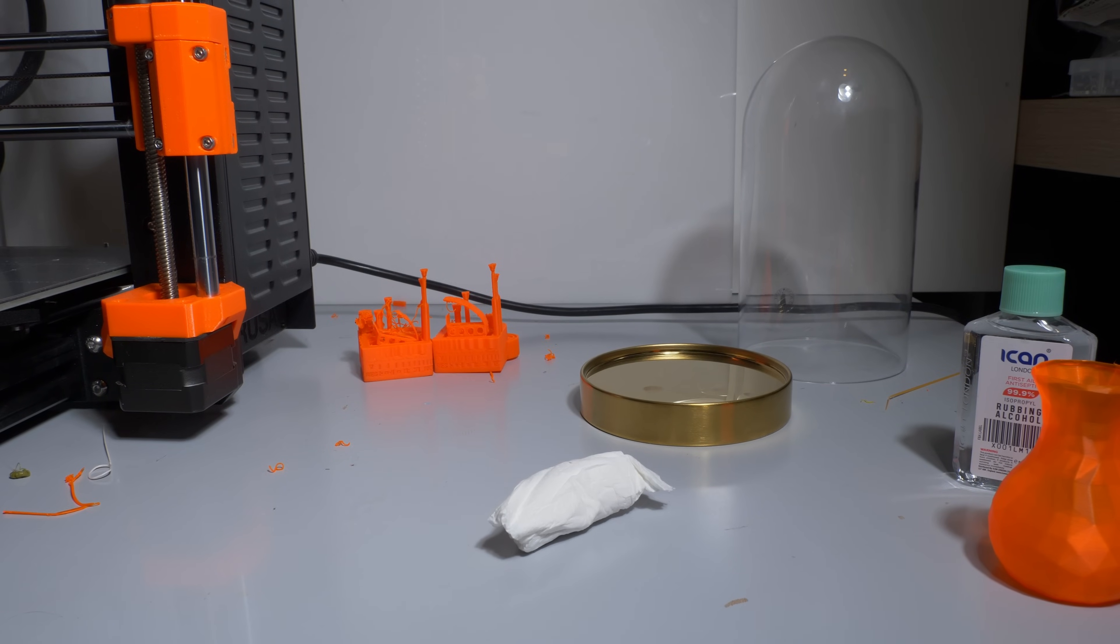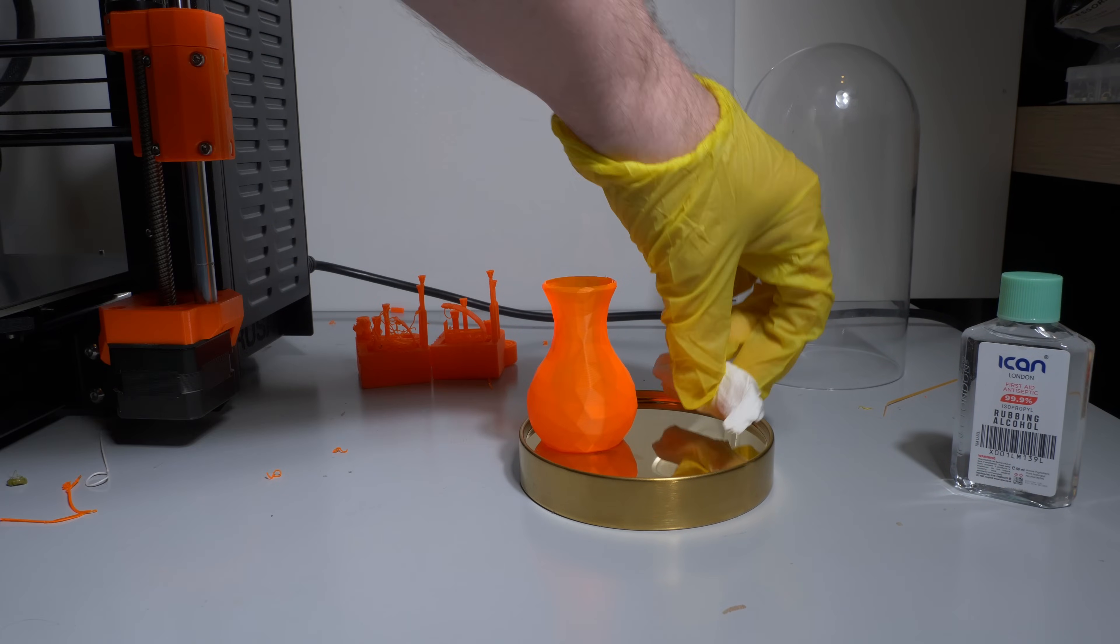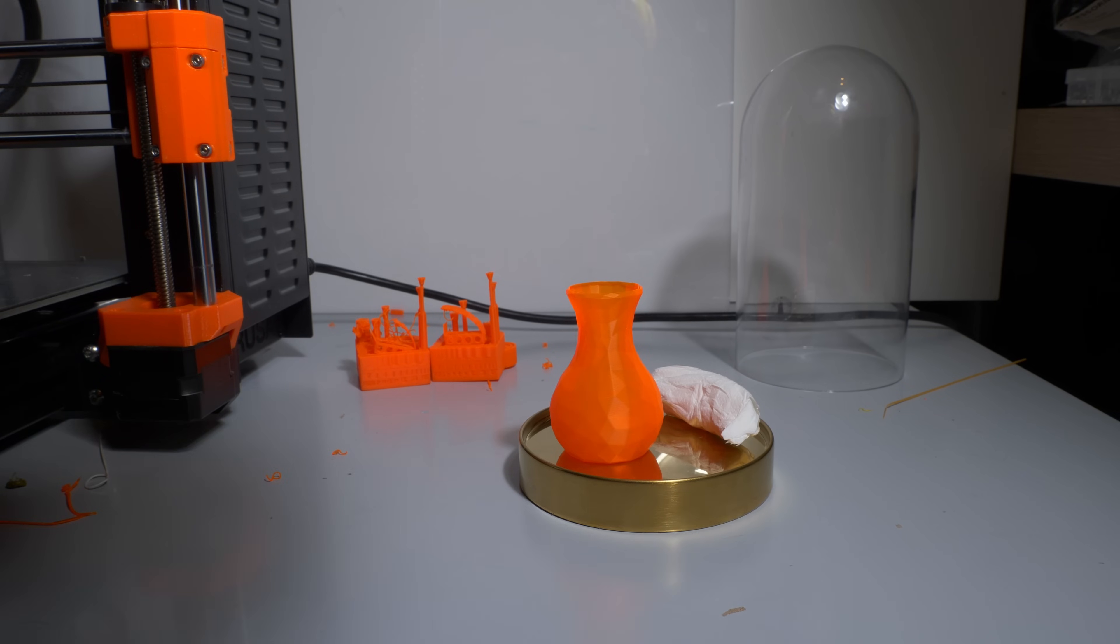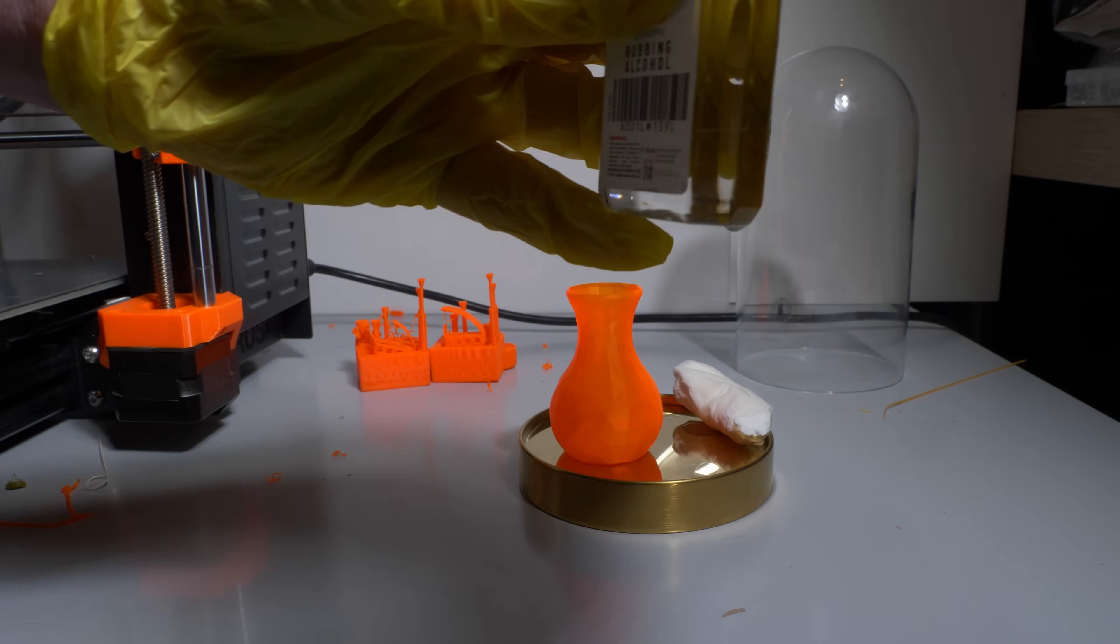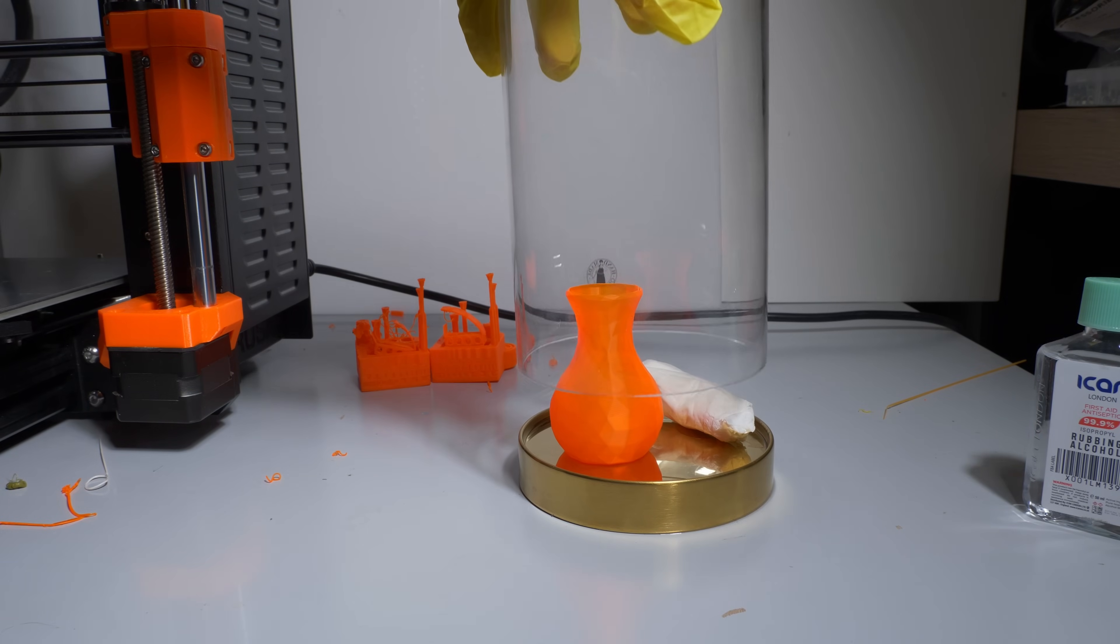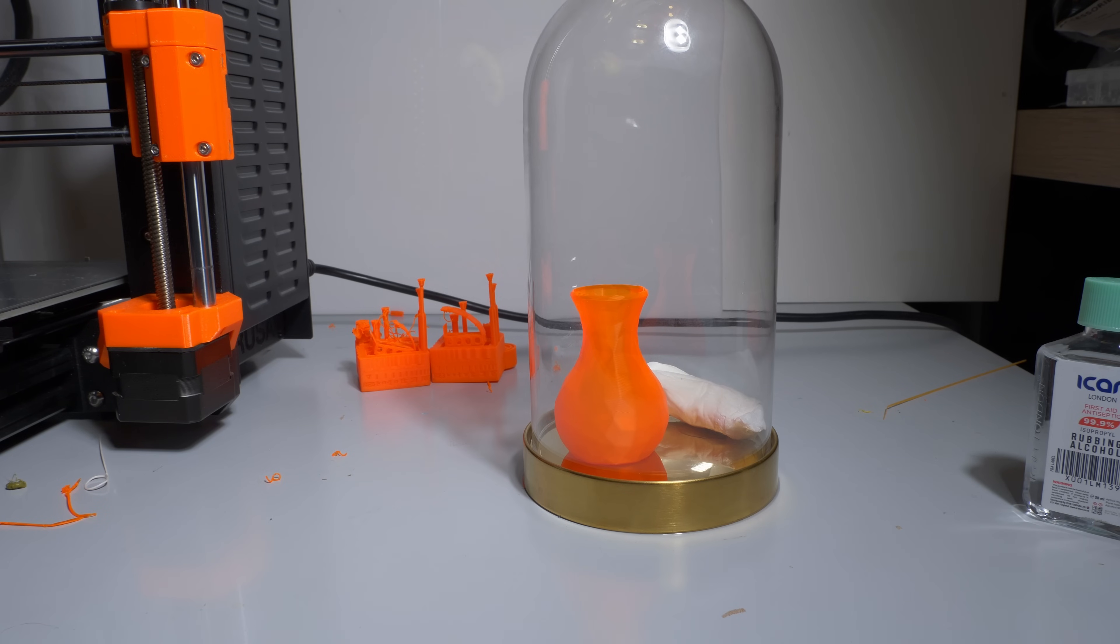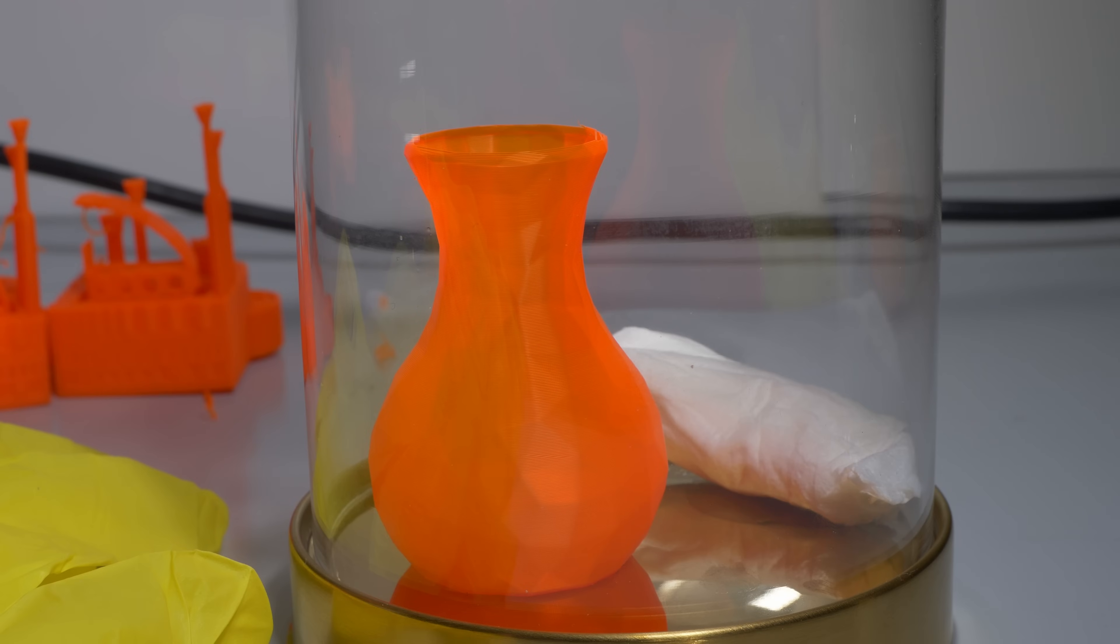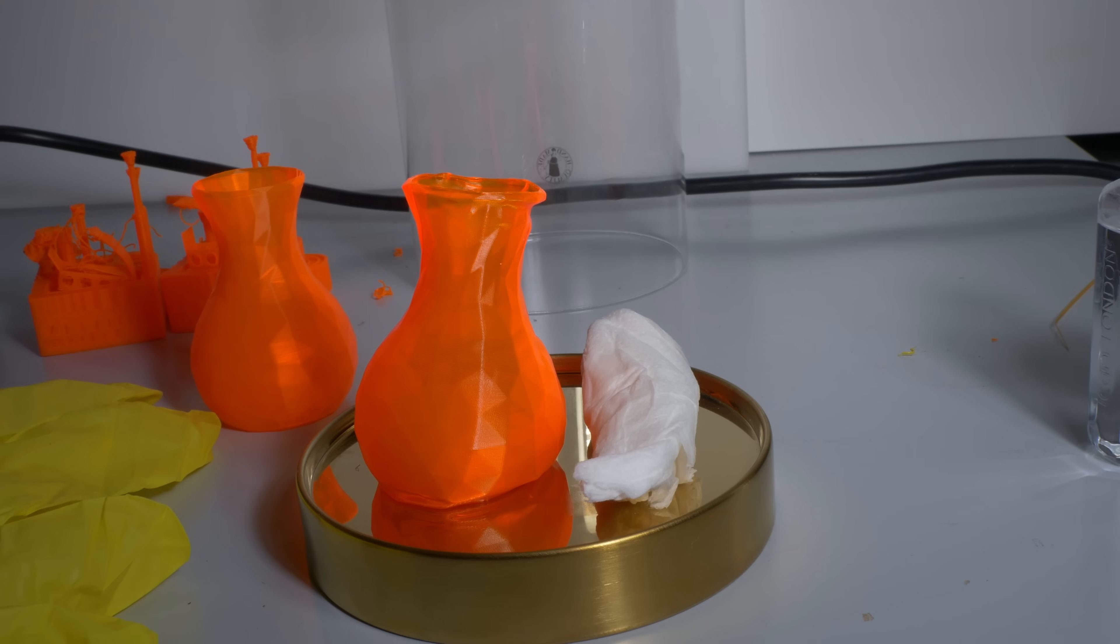You might have encountered vapor smoothing with ABS using acetone vapor. With PVB it's kind of the same but less dangerous and in some ways easier. You create a source of alcohol vapor, probably spilling it everywhere. Luckily, isopropyl is also a cleaning fluid. Then you seal the container. I have a cloche from Ikea which works pretty well. You want to leave it until you have the desired effect.